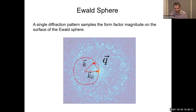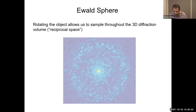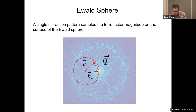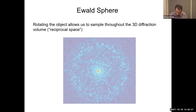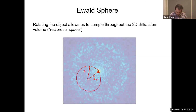A single coherent diffraction pattern can't give three-dimensional information — it samples within a three-dimensional space but gives only partial information. If you rotate the object — which is equivalent to rotating the incident beam direction k₀ — the Ewald sphere rotates around, allowing you to sample different regions in reciprocal space. That's how you fill out reciprocal space to build a three-dimensional image.